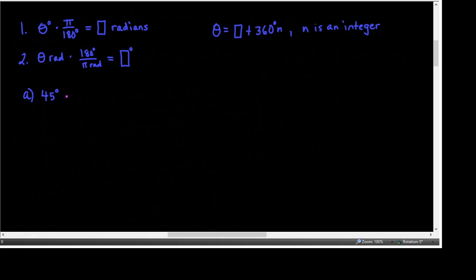We multiply by a form of 1 that has degrees in the denominator so they cancel: 180 degrees equals pi radians. 45 goes into 180 exactly four times, so the answer is pi over 4 radians.